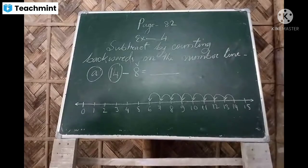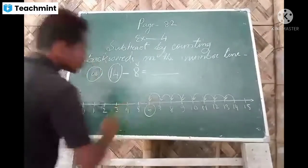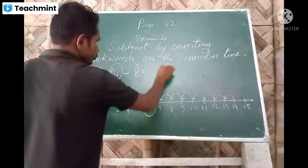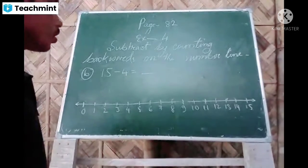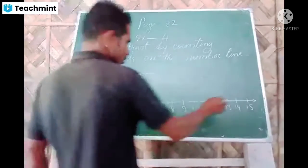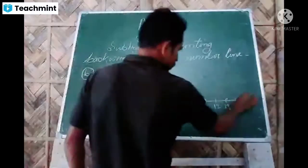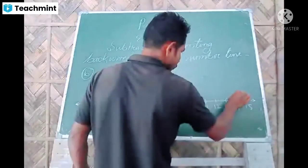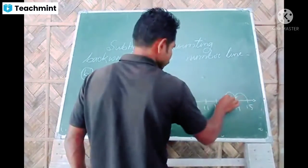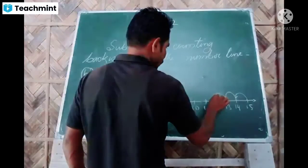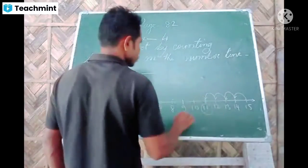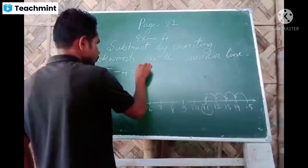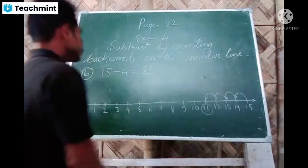We have to come backward from 15, and 4 times have to come here. This one, one time, two time, three time, four time. Then what getting here? 11. So the answer is 11.